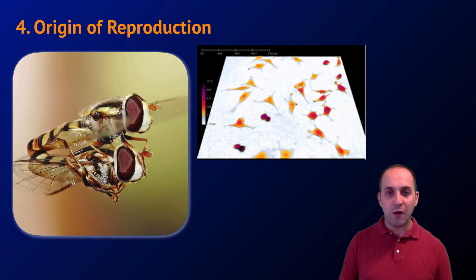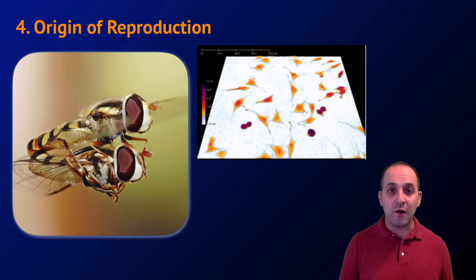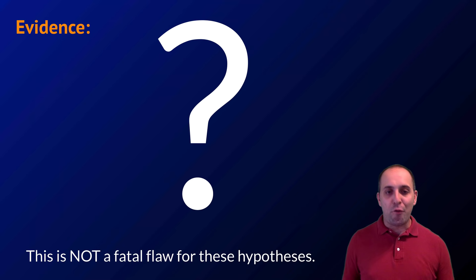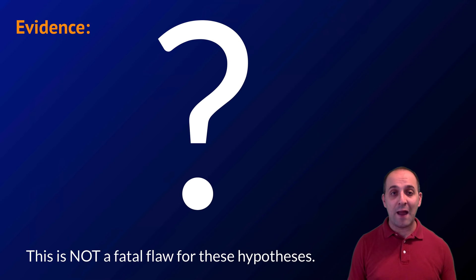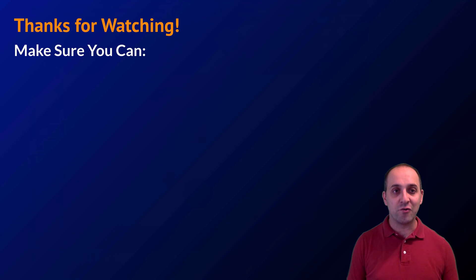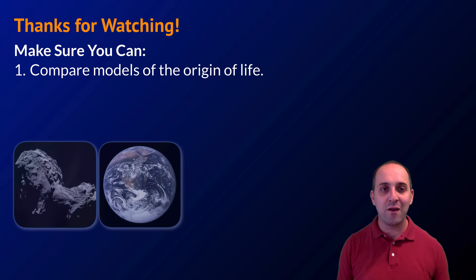Finally, we need everything to reproduce. Scientists are actively investigating the origin of cell division and reproduction, but that's beyond the scope of this video. The lack of complete evidence is not a fatal flaw for any of these hypotheses — that's how science works. We gather evidence to inform our thinking, and the origin of life continues to be an active area of scientific research. Resources will be linked below the video.